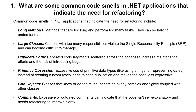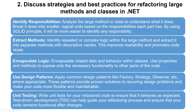We also have excessive use of primitive data types, like using strings to represent dates instead of creating custom types, which leads to code duplication and makes the code less expressive. There are also god objects — classes that know or do too much, becoming overly complex and tightly coupled with other classes. Finally, excessive or outdated comments can indicate that code is not self-explanatory and needs refactoring to improve clarity.